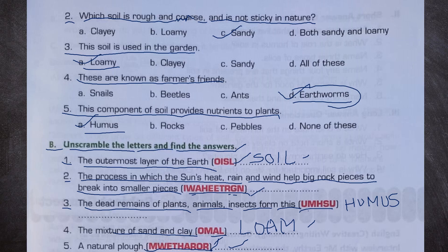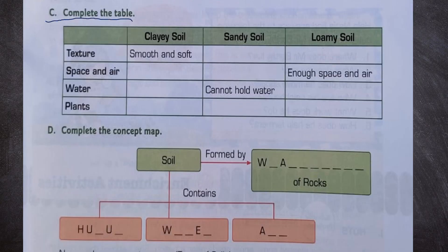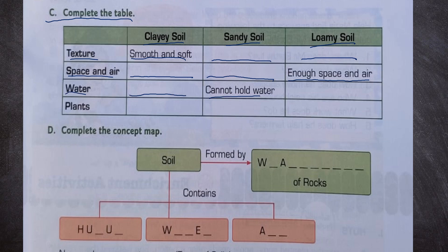Question C — complete the table. Texture: clay soil is smooth and soft; sandy soil is rough and coarse; loamy soil has mixed texture. Space and air: clay soil does not have space and air; sandy soil has space and air; loamy soil has enough space and air. Water: clay soil holds water; sandy soil cannot hold water; loamy soil can hold water. Plants: fern and aster in clay soil; babul and palm tree in sandy soil; cucumber and capsicum in loamy soil.